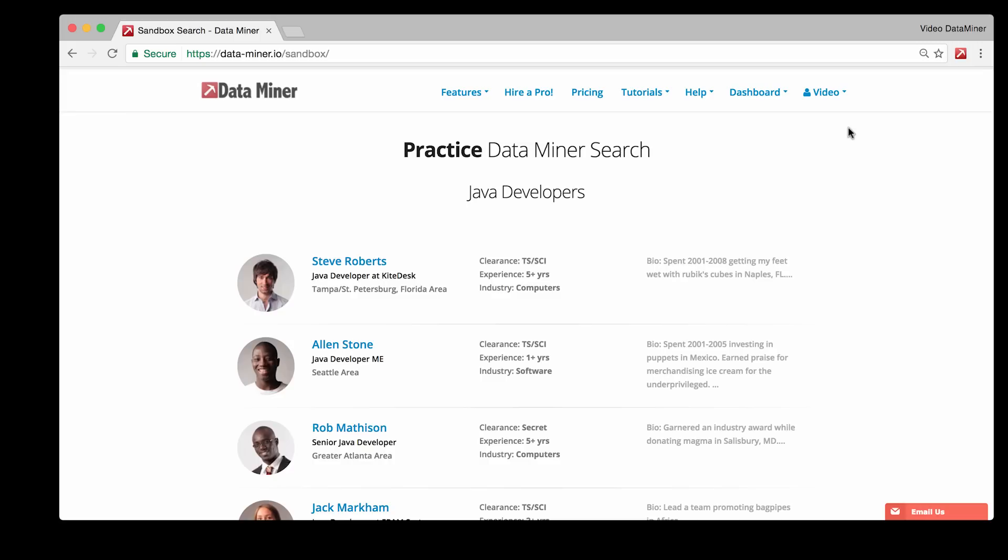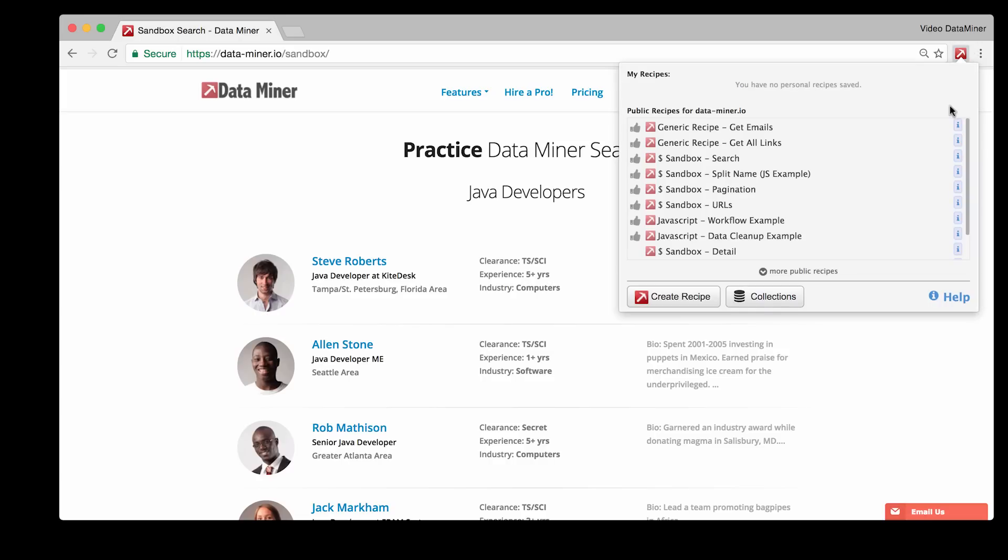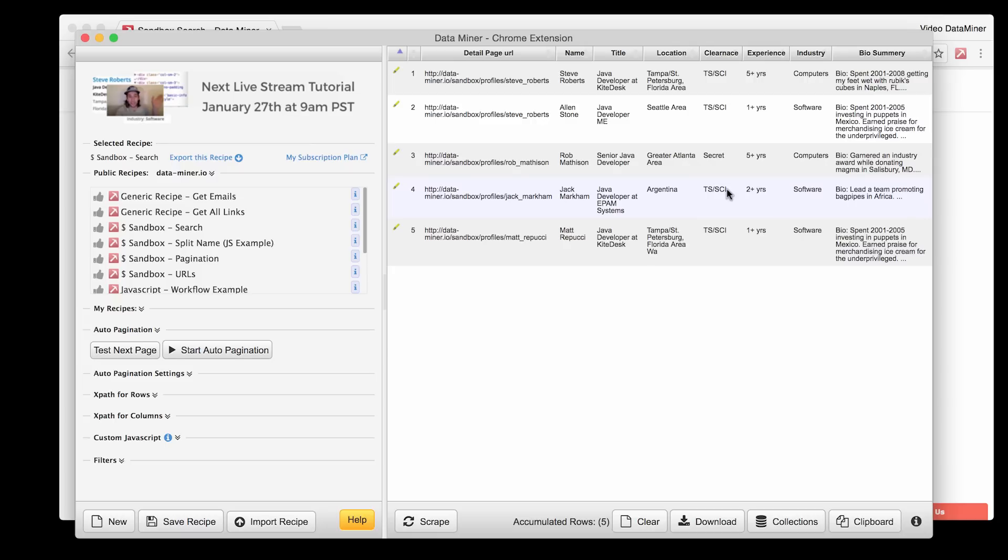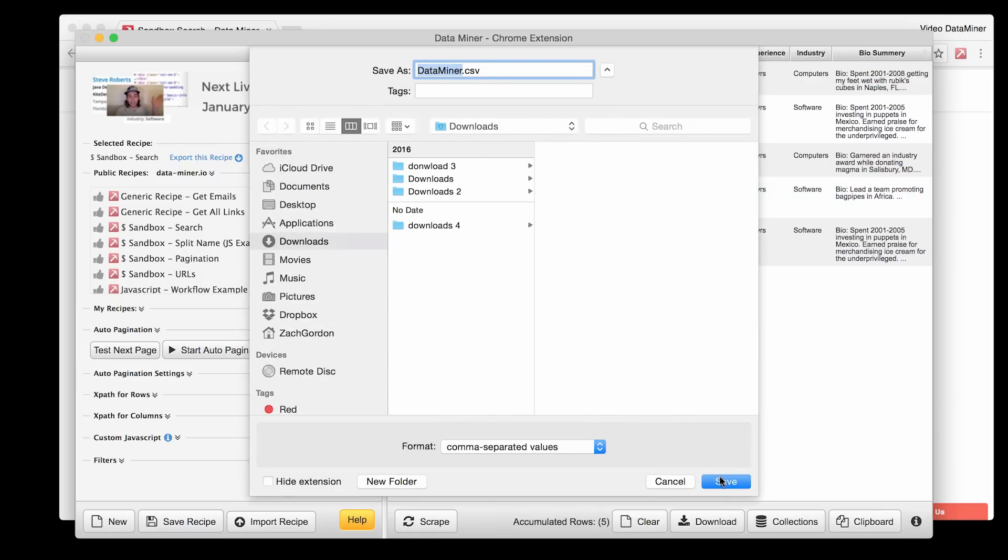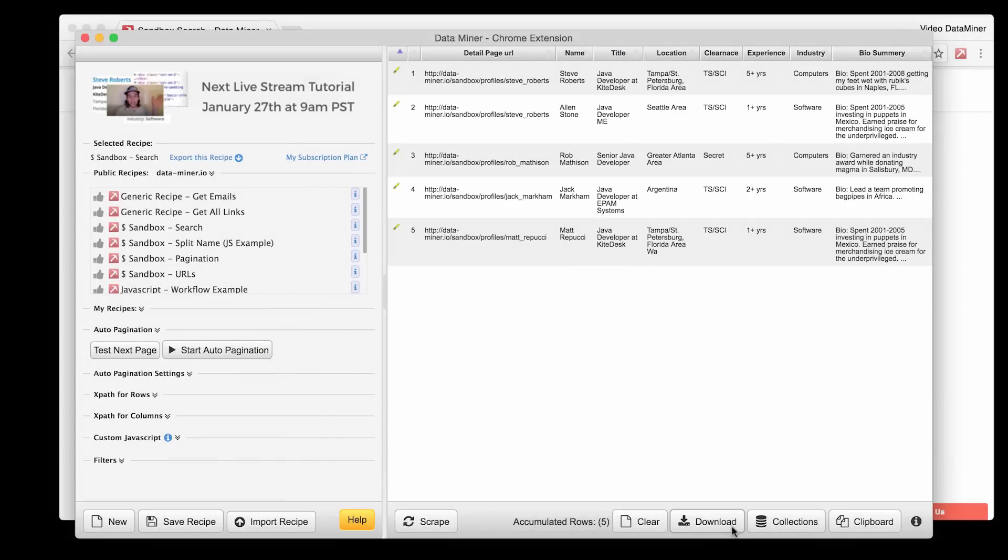Here we have a page of search results in a list formation. For this information, all we have to do is click on the Dataminr icon and select the appropriate recipe. Once that is run, download the information. And now that we have this data, let's take a look at a few more features that Dataminr has.